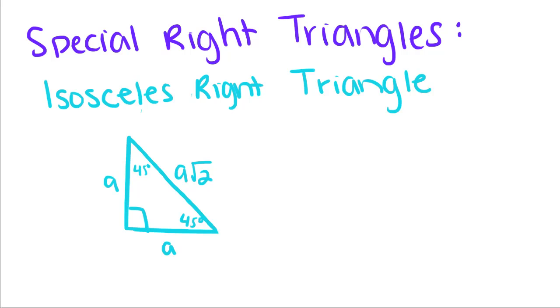Last video we learned about right triangles in general and how their sides relate to one another. But today we're going to talk about special kinds of right triangles that have a different association.